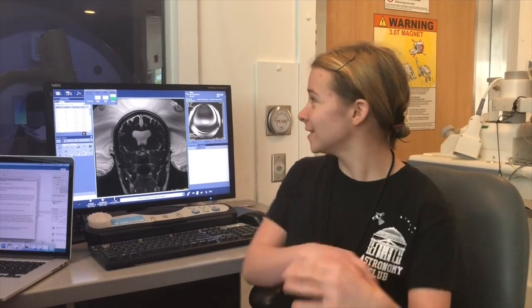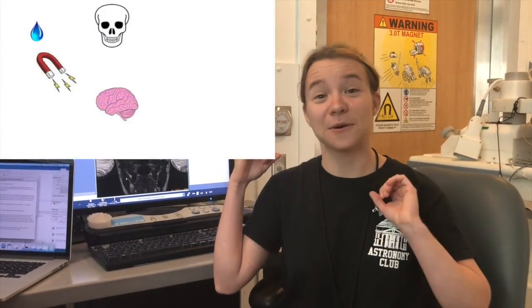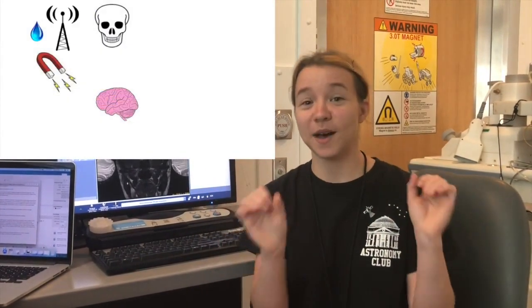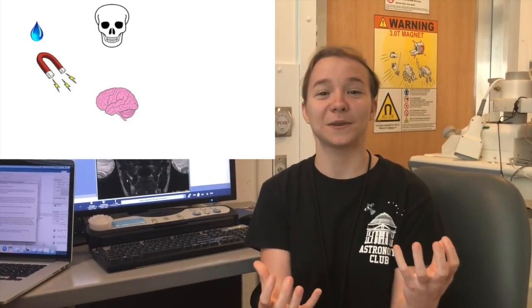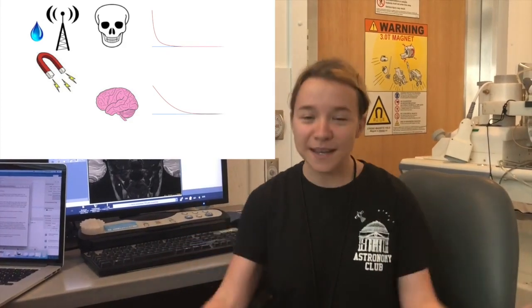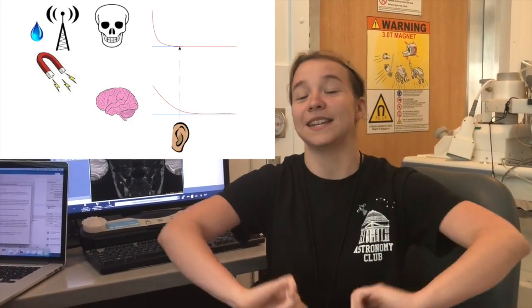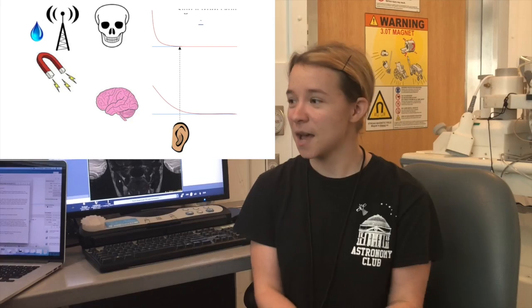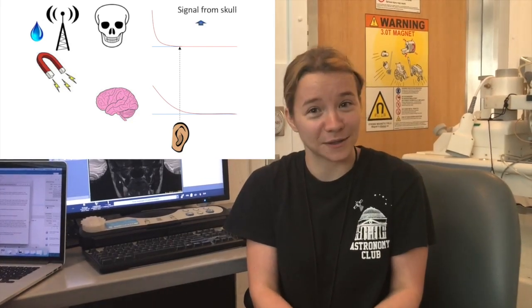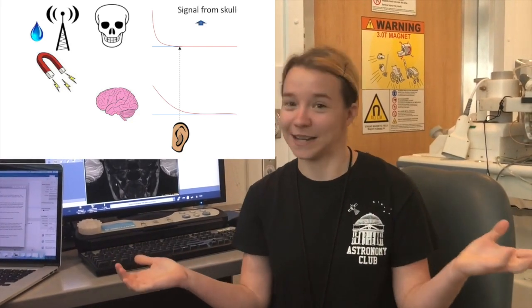The reason it's so hard to image the bone is you can imagine the MRI scanner as a big radio tower. It's sending out radio waves into the body at the perfect frequency to excite the water molecules that we have. And then when the water molecules are excited, they'll pick up that energy and then slowly re-emit it and that's what we measure in the scanner. But bone doesn't have that many water molecules. So that's one issue, we're not going to get much signal from it.